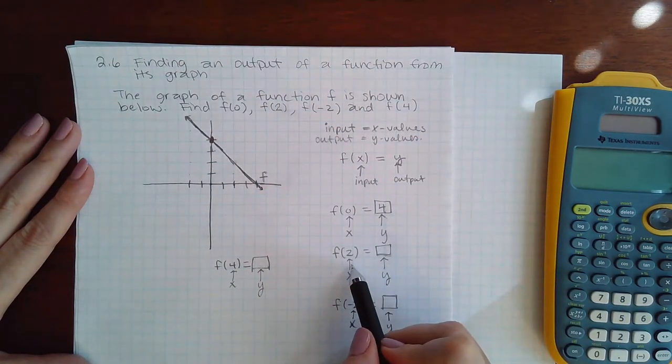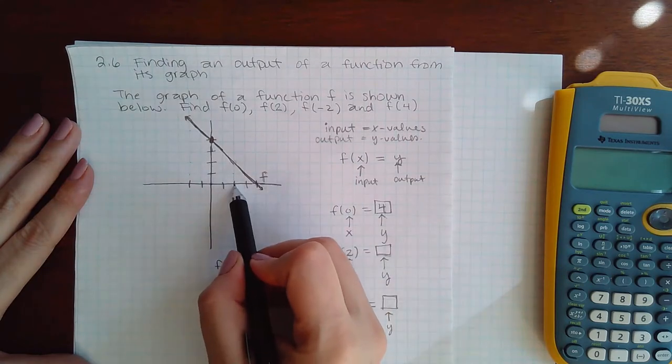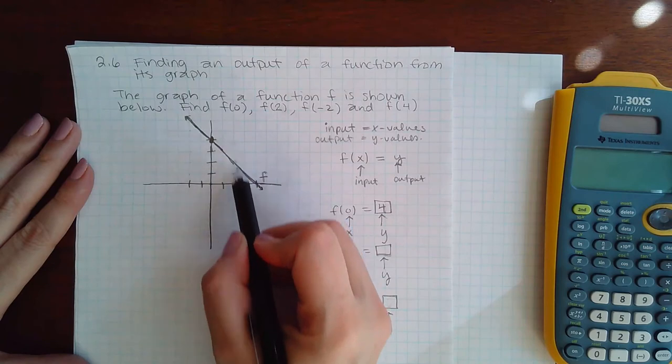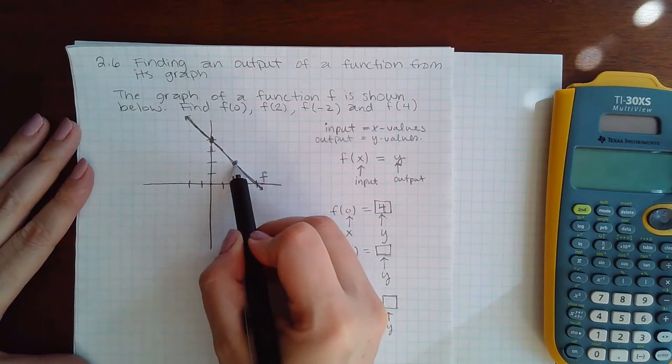Now for the second one, f(2), my x coordinate is 2, so I would come over to x equals 2 and then either search up or search down to find the function. I find the function here and that y coordinate happens to also be 2.